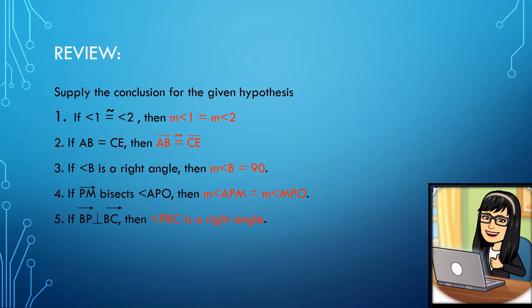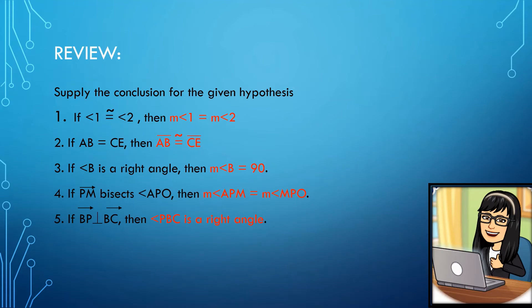I hope the concepts on supplying the conclusion for given statements are clear. We are now ready to work on the two-column proof. In the two-column proof, the first column has the statements and the second column has the reason. Statements are already provided in this activity, so we only need to give the reasons. Remember: when we talk about reasons, we will only use postulates, theorems, properties of equality and congruence, as well as definitions of basic geometric terms.